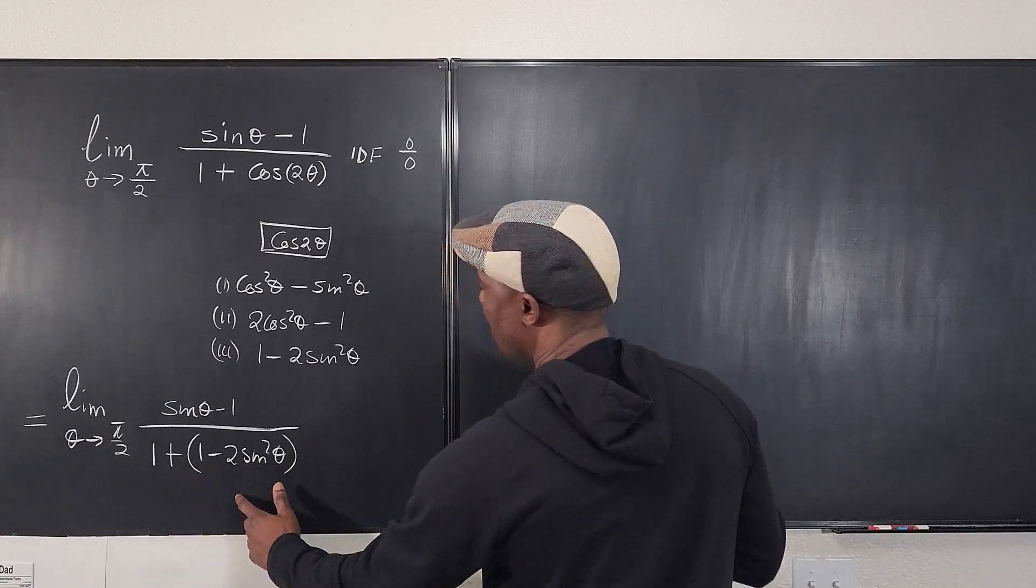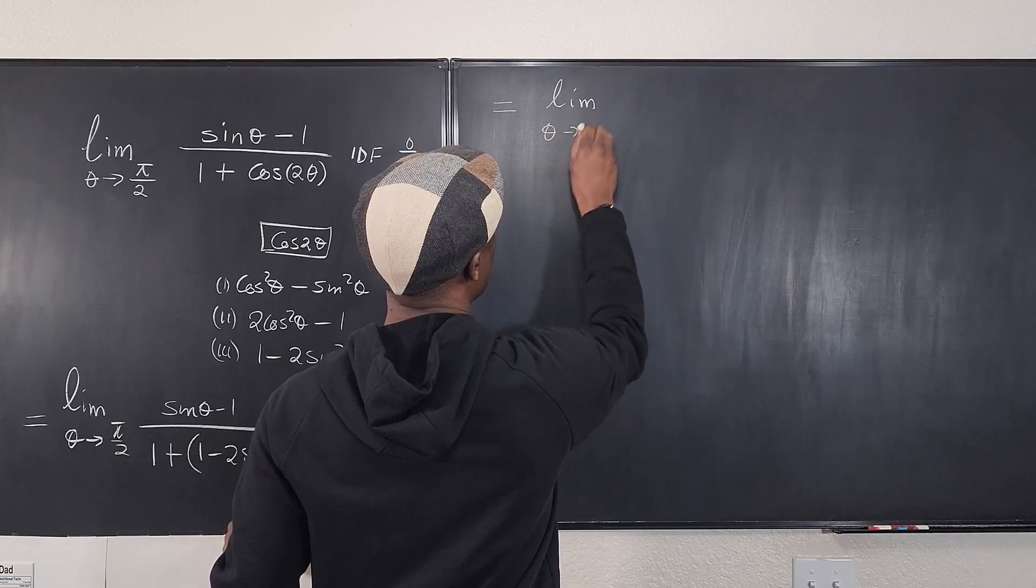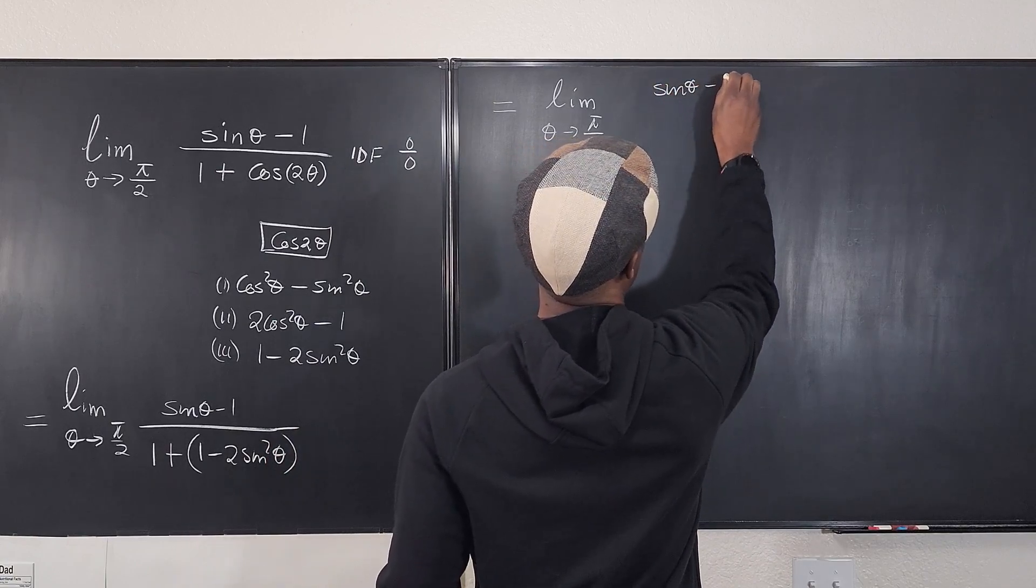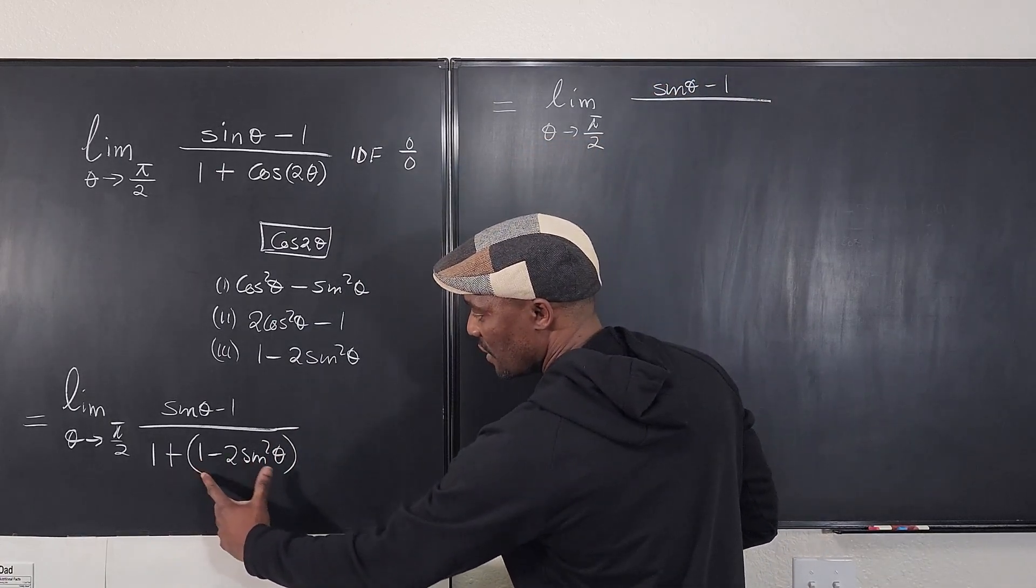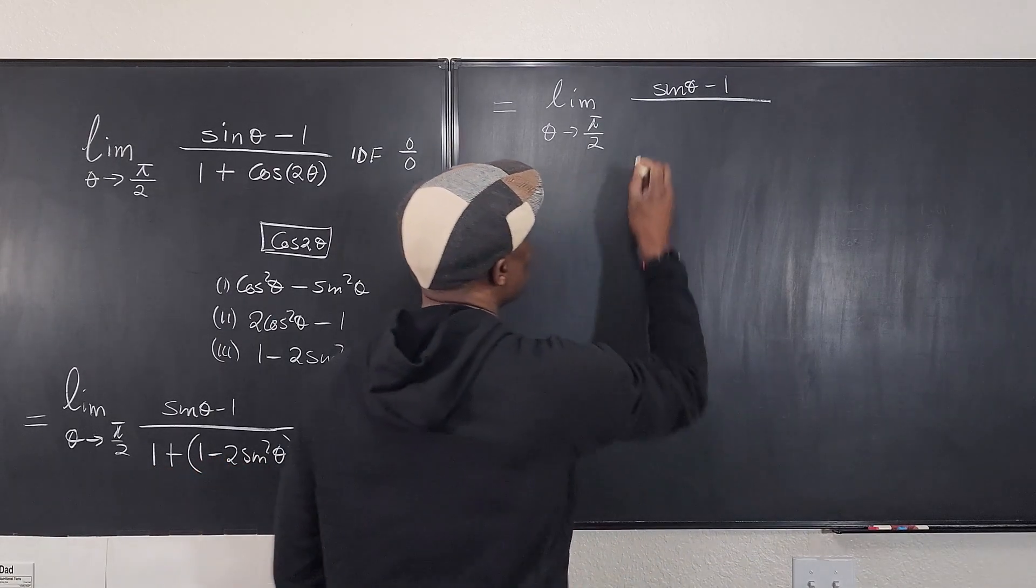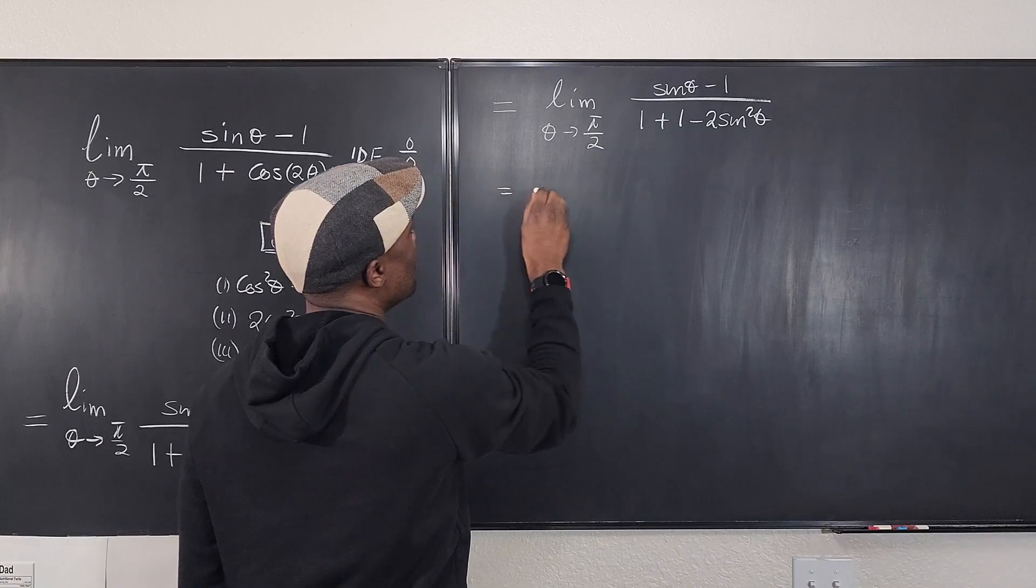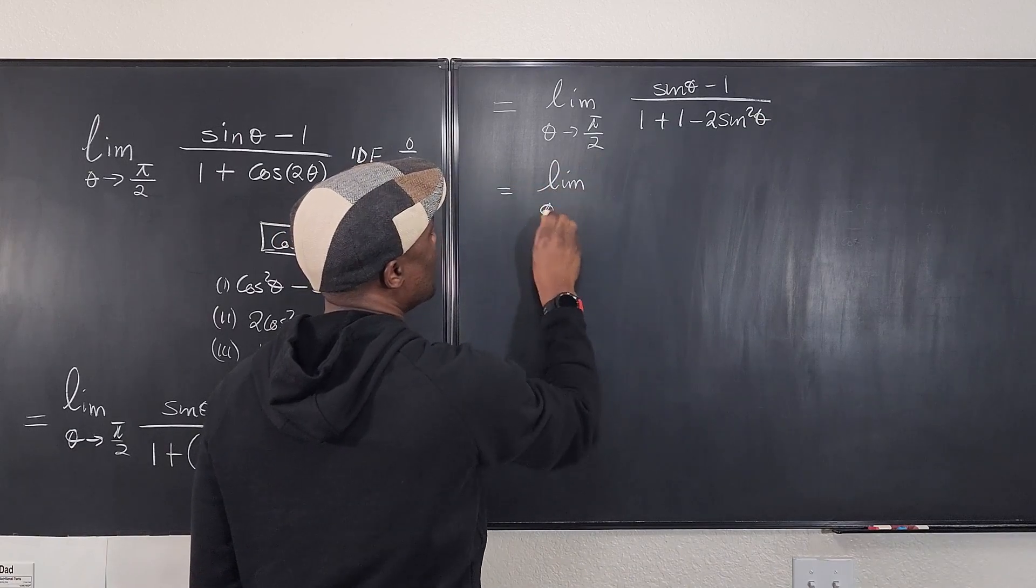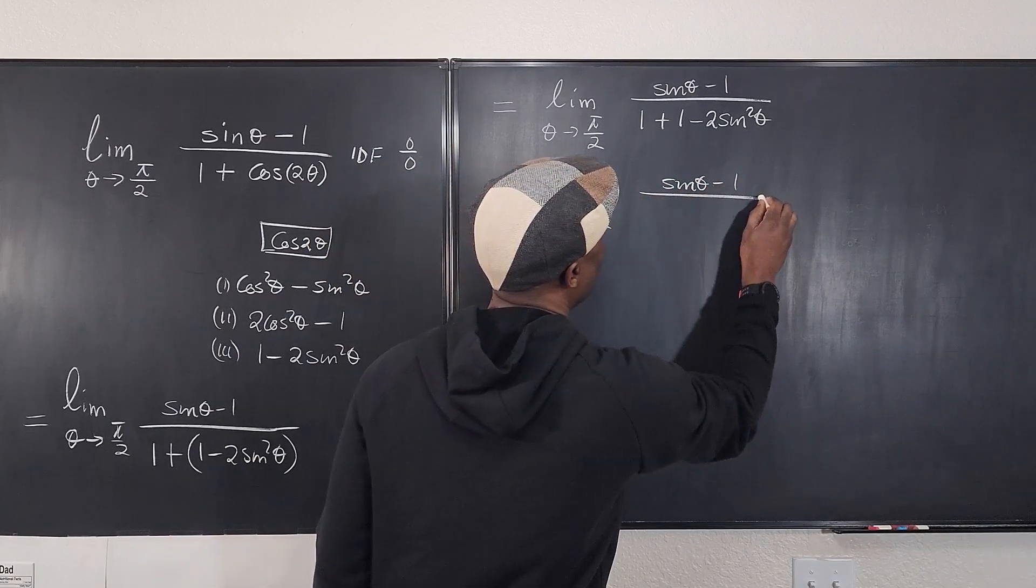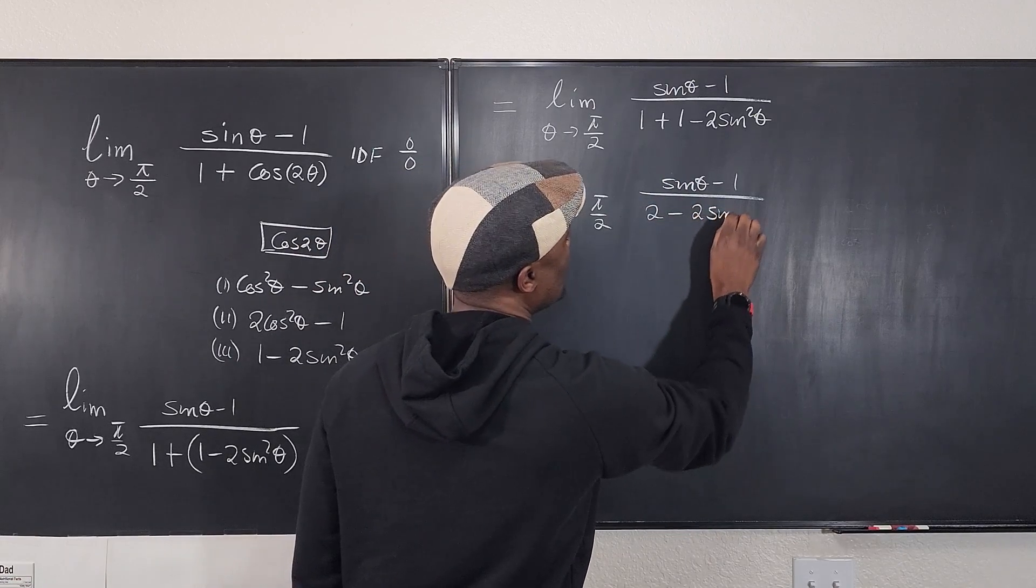Now, if we try to simplify this, this is going to be equal to the limit as θ goes to π/2 of sinθ minus 1 over, now if we remove this parenthesis, we're going to have 1 plus 1 minus 2sin²θ, which is going to be equal to sin²θ, which is going to be the limit as θ goes to π/2 of sinθ minus 1 over, now we combine this, you're going to have 2 minus 2sin²θ.